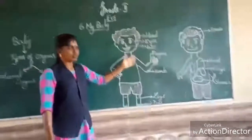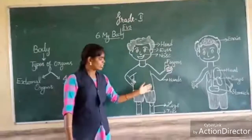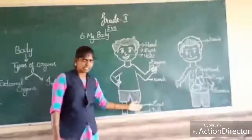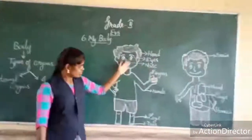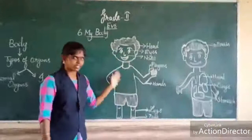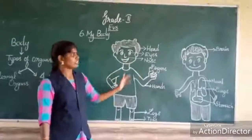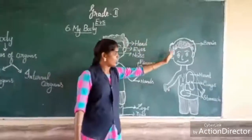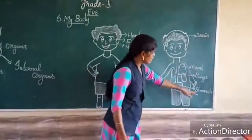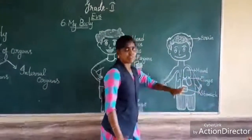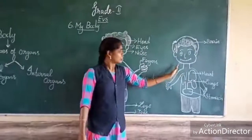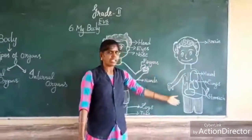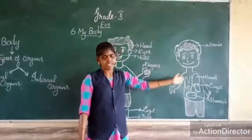Head, eyes, nose, fingers, leg, toes — we can see outside. This is for external organs. Brain, heart, lungs, stomach — we can't see outside. This is for internal organs.